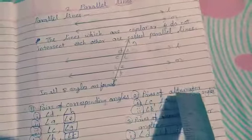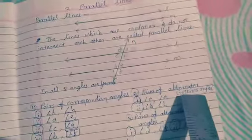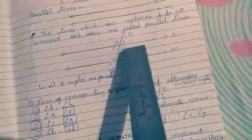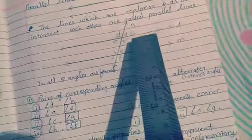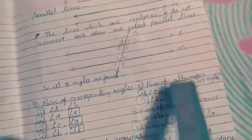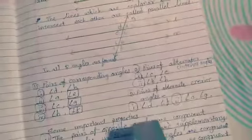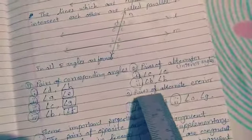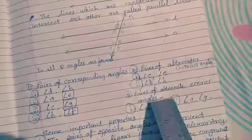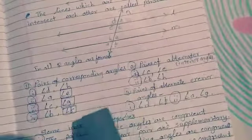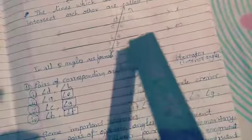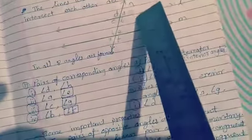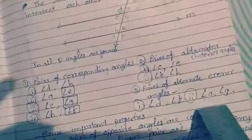Number 2: Pairs of alternate angles — here, interior alternate angles. Interior means inside the lines. Angle C and E, and angle B and H are the interior alternate angles. Number 3: Pairs of alternate exterior angles. Exterior means outside the lines. Angle D and F, and angle A and G are the exterior alternate angles.